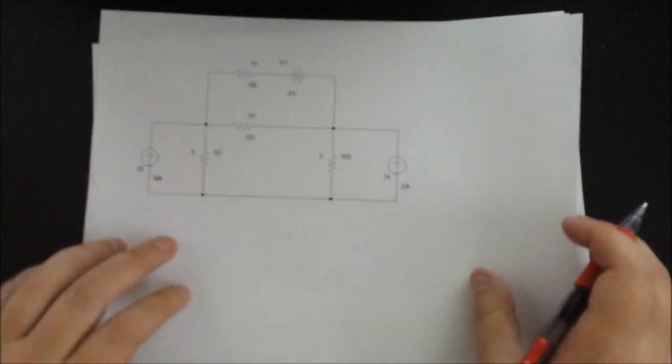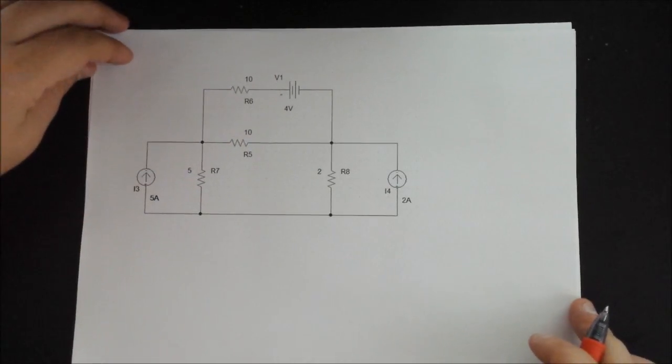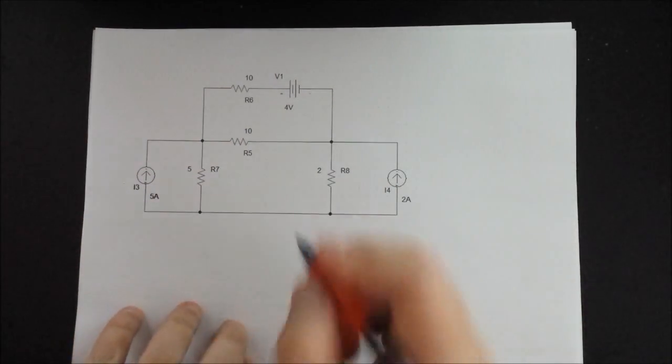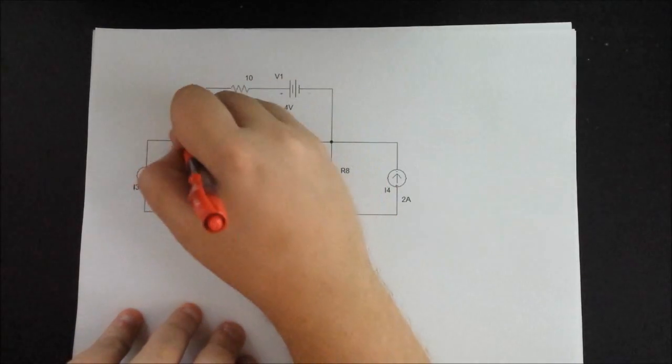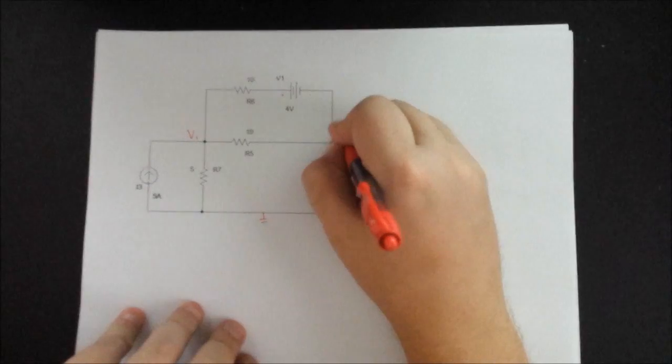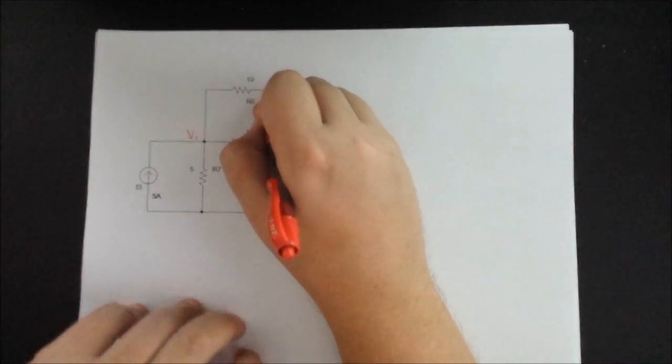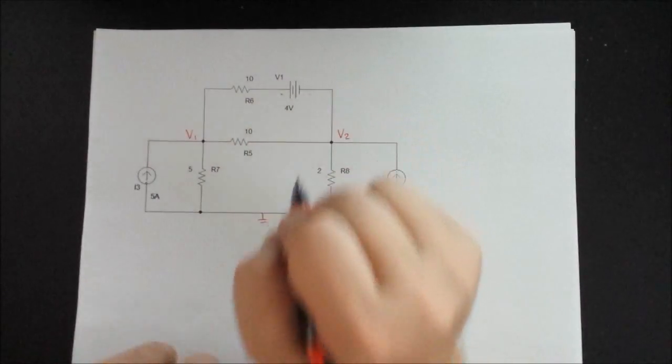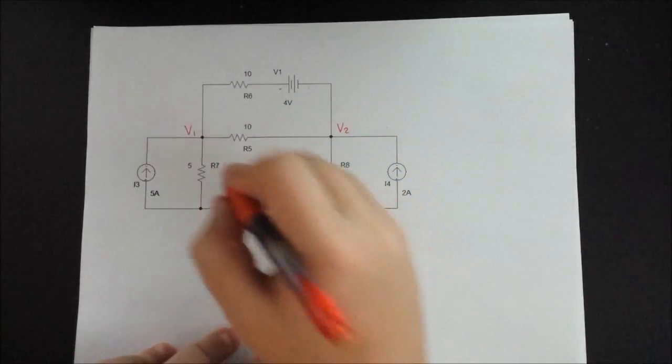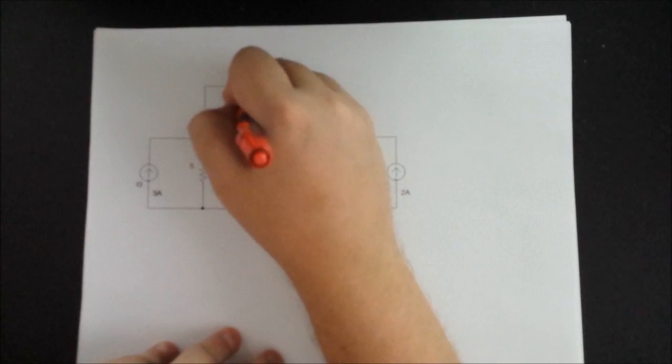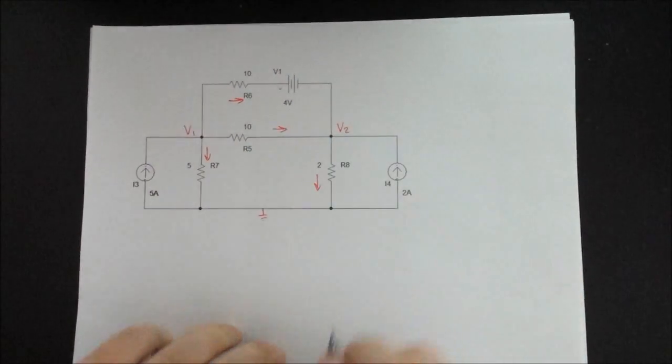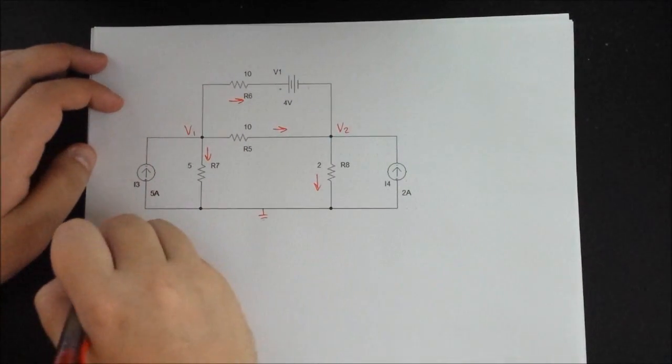Alright, so let's go to the second circuit. So once again, we start by identifying the ground. We go into our nodes, so this is V1 and V2. Here you're tempted to place a V3, but I'll show you how to solve it without using a super node. Let's identify the currents. This one's going down, left to right.